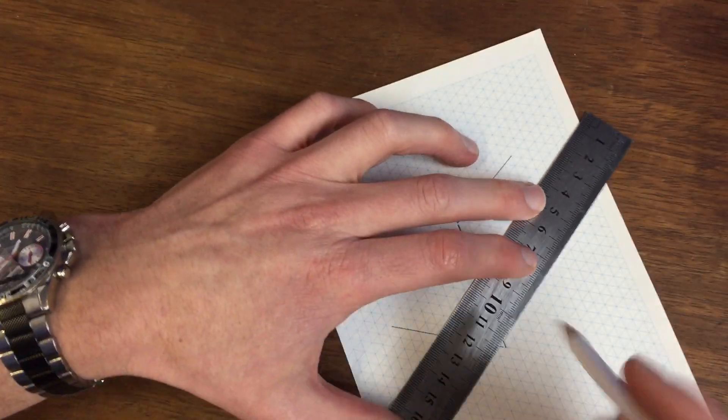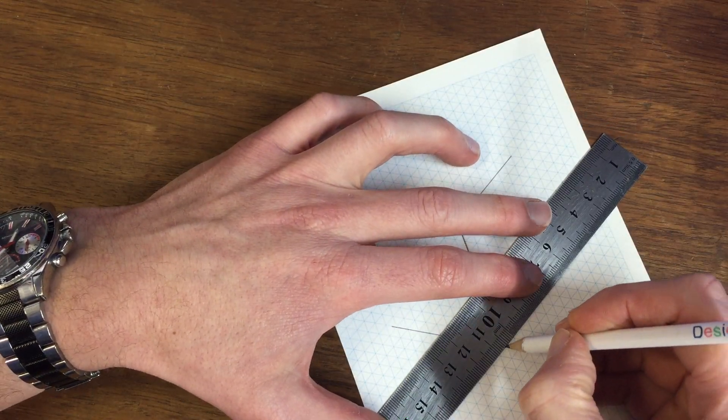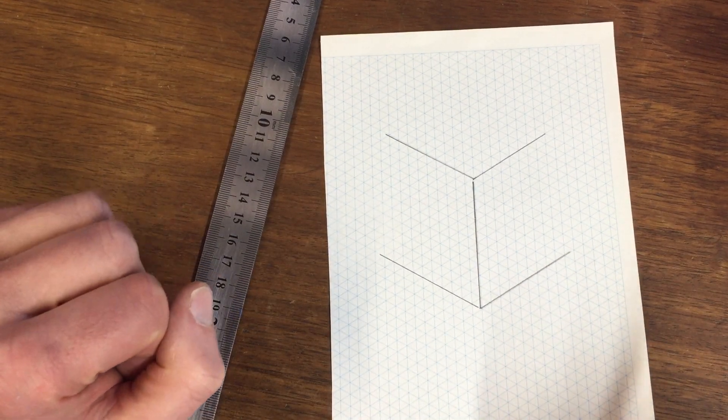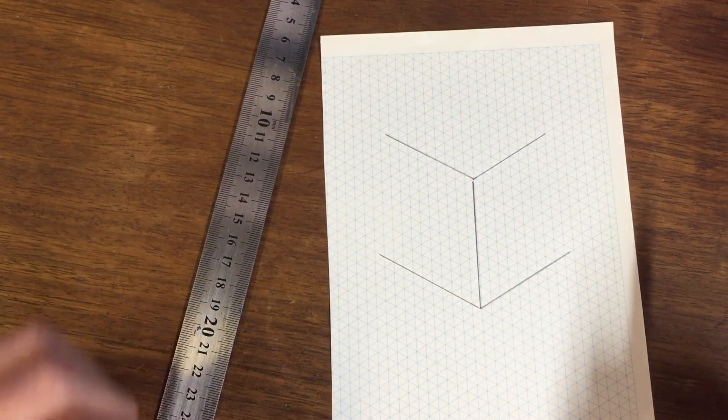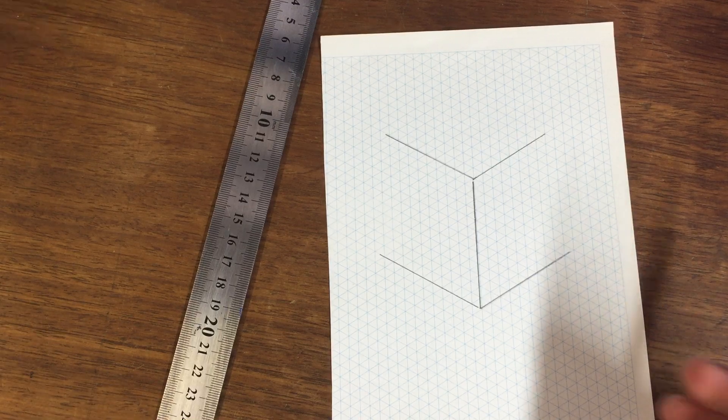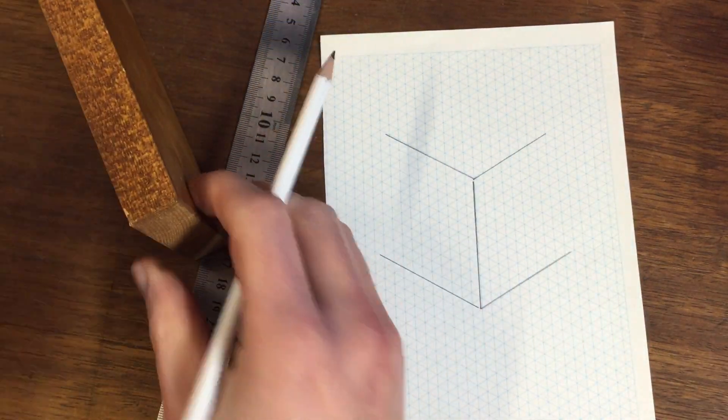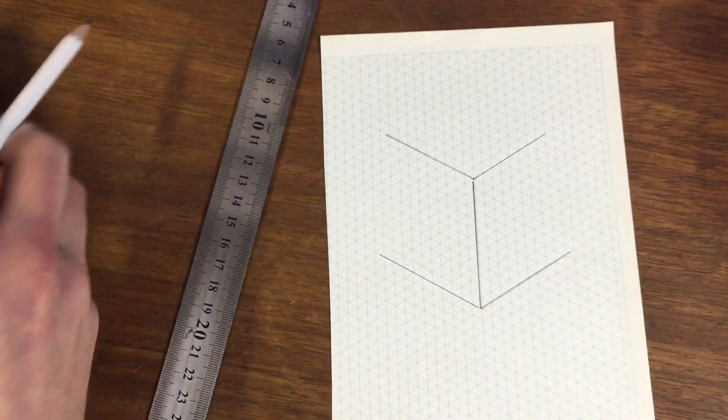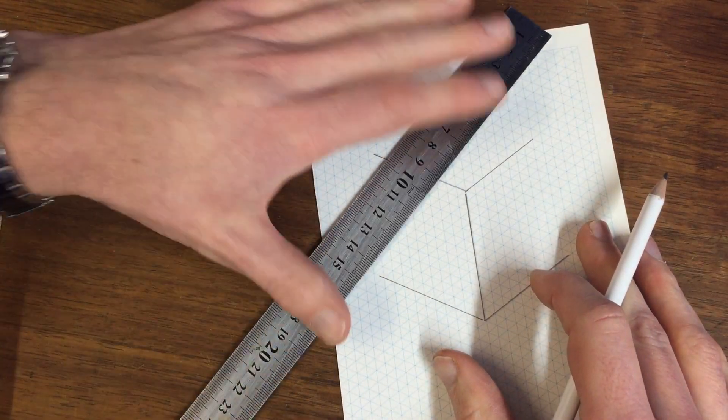Again, do it lightly in case you make a mistake. After that, I'm going to add this section of the joint as you see it like that.